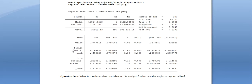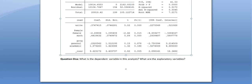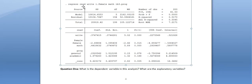Our dependent variable is read. Our explanatory variables are write, gender (labeled female), math, and general academic progress. The dependent variable read is identified because it's the first variable listed and the only one isolated from the others by lines in the main body. Remember, the variable '_cons' (constant) is not listed at the top command line, confirming it's not actually one of our variables — ignore it.